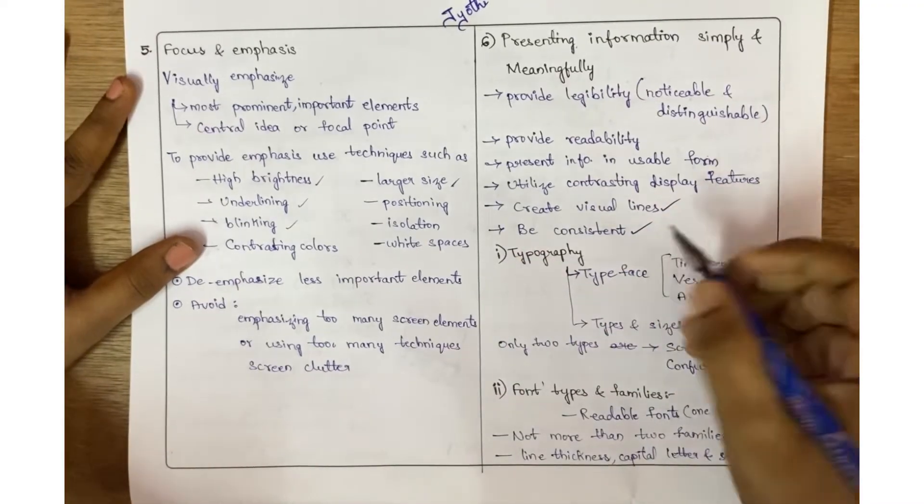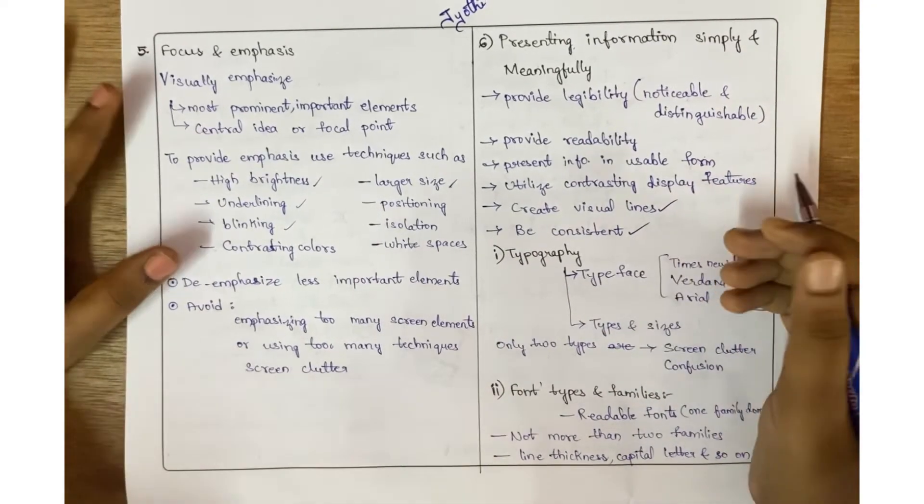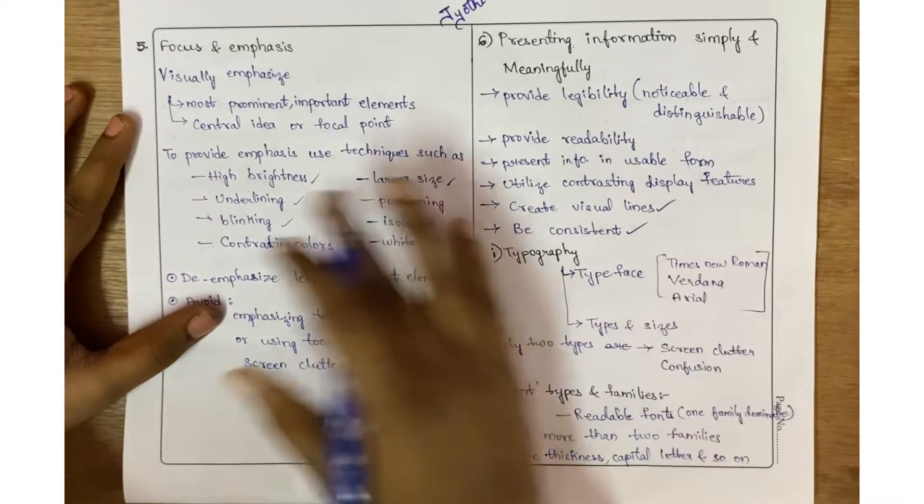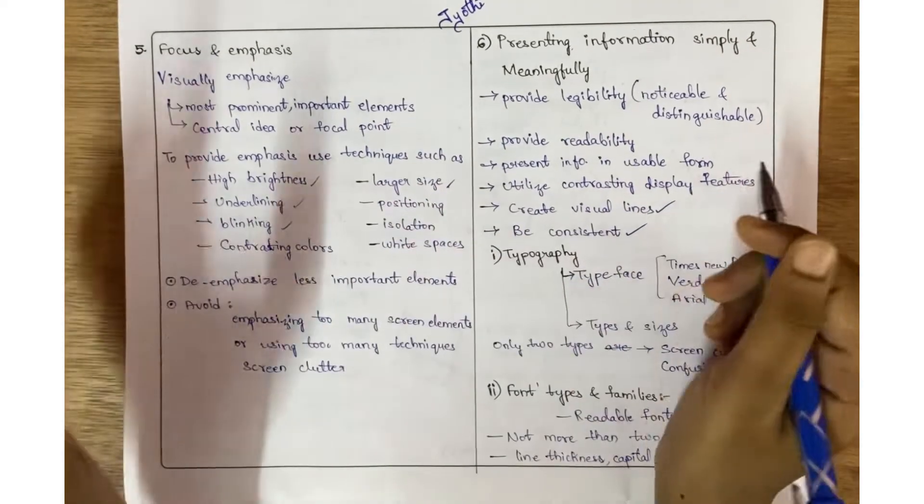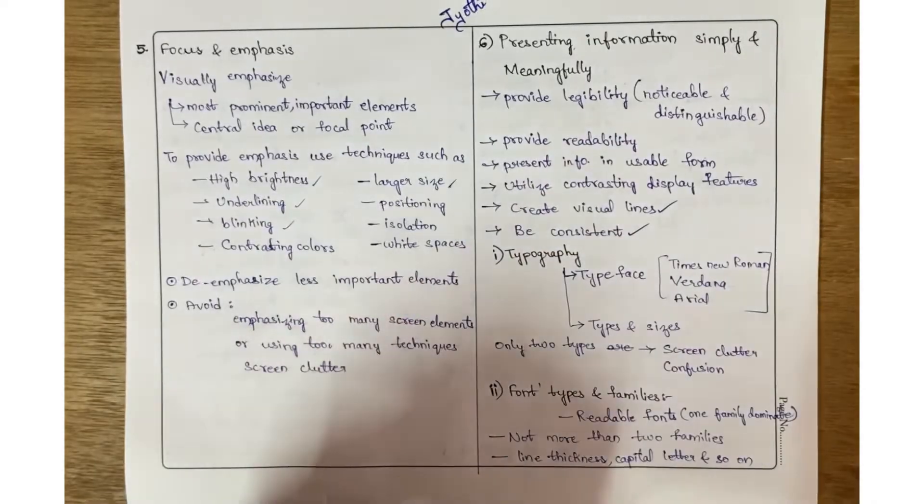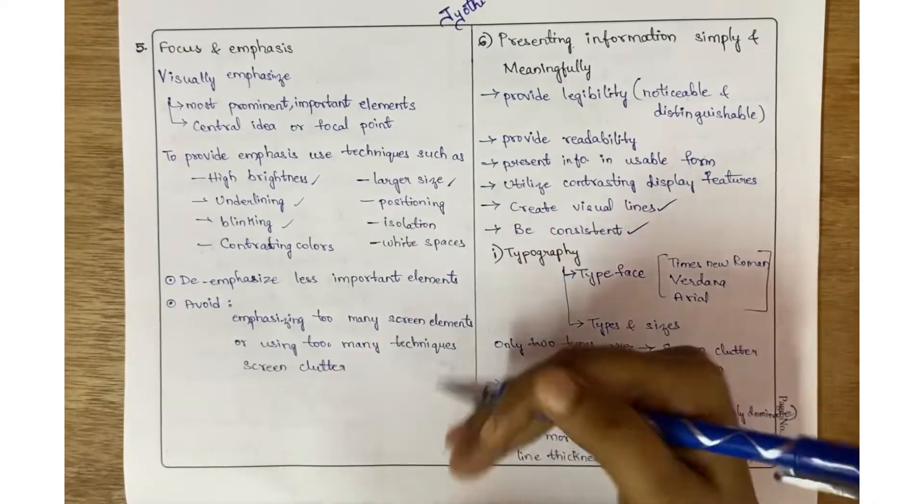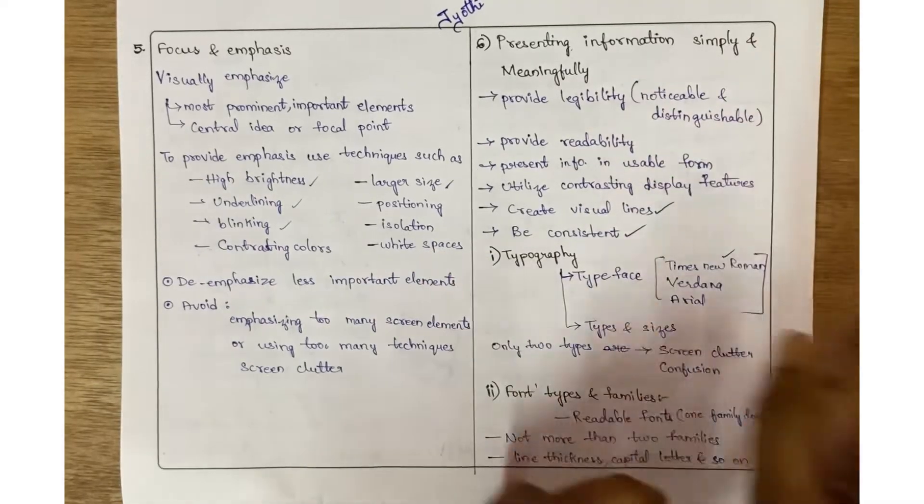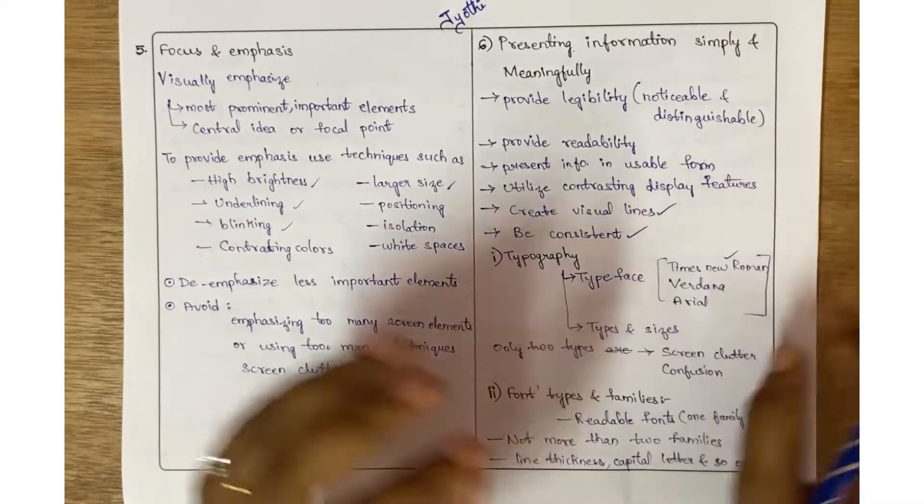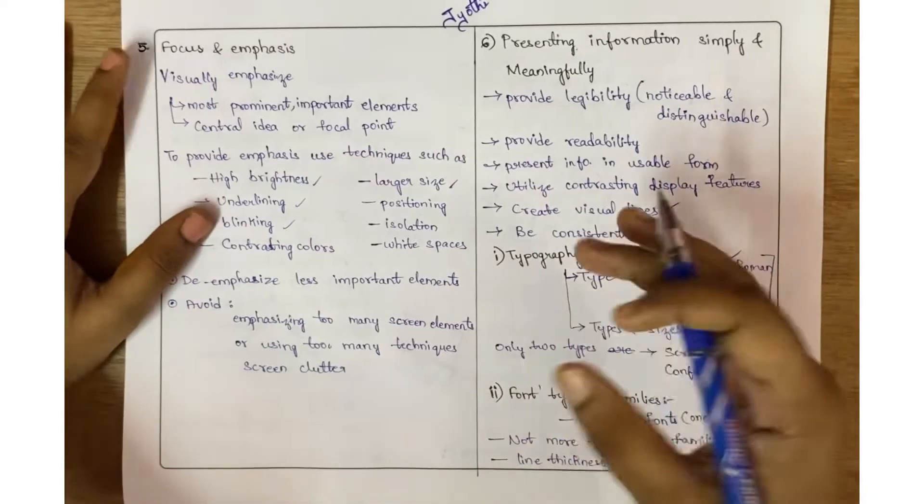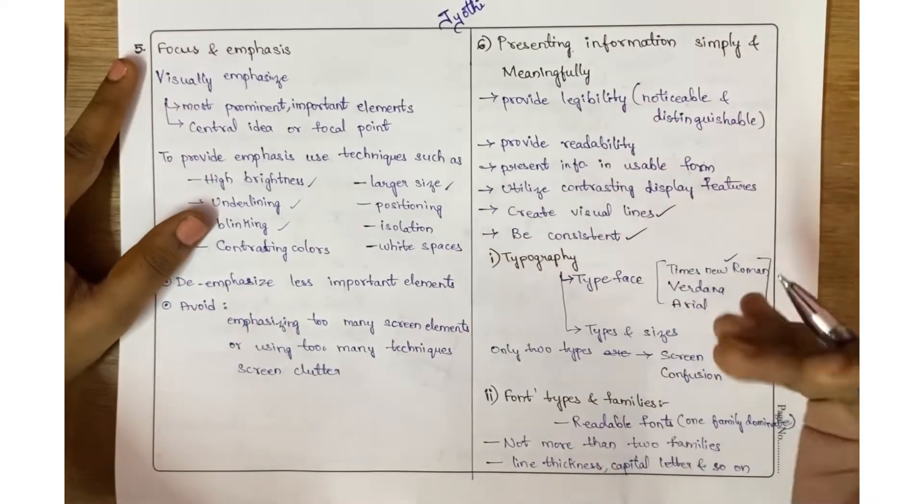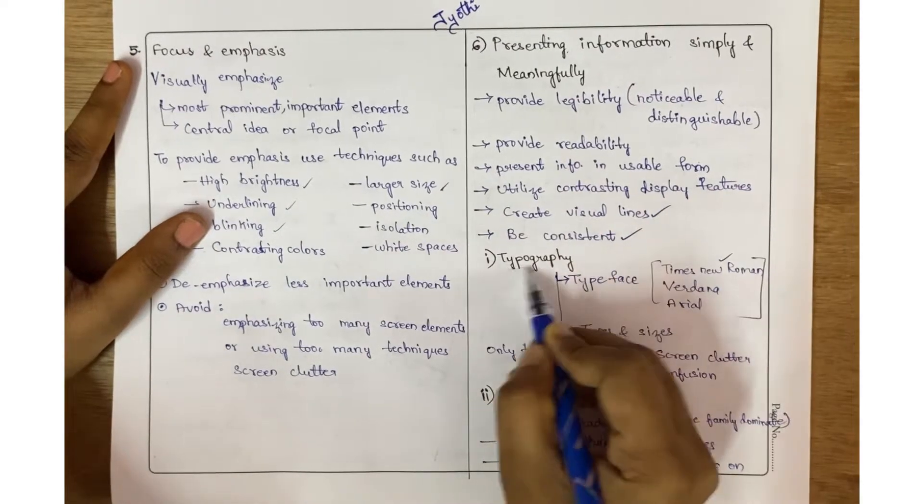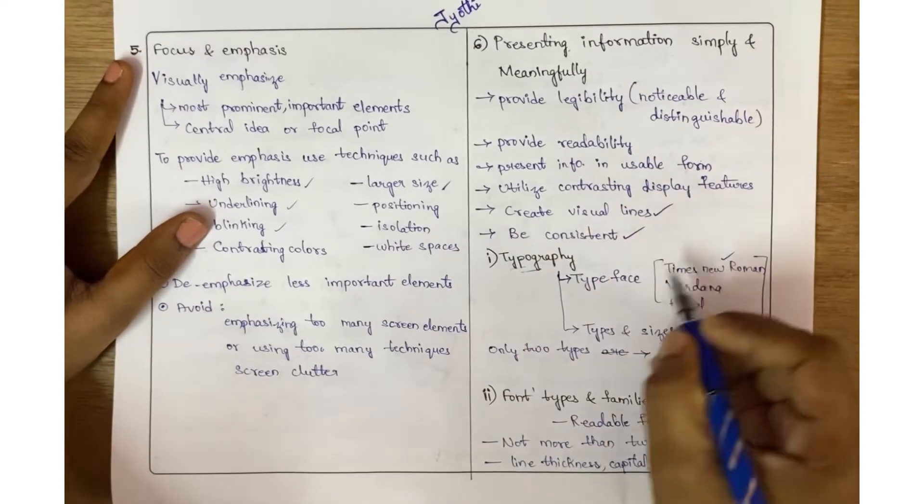Typography is using the types and sizes, I mean font sizes. Generally when we are preparing our major project documents, they give guidelines like use only Times New Roman, the heading should be size 14 and the content must be 12. Why? Because it is the most commonly used and easy to read.